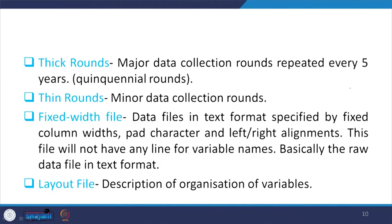Thick rounds are the major data collection rounds, repeated as mentioned every 5 years — usually called quinquennial rounds. Thin rounds are minor data collection rounds, sometimes also called annual rounds. Special rounds are called thin rounds because the coverage is either less in sample number or the number of issues covered is limited compared to thick rounds.